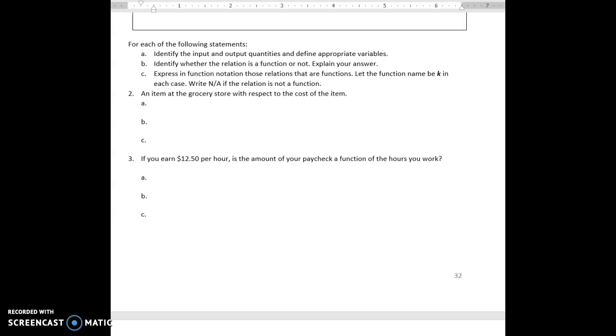We're going to do parts A, B, and C. First, identify the input and output quantities - it's always the first thing we want to do. Then we're going to identify whether the relationship is a function or not. If that relationship is a function, then we are going to write it in function notation using the function name K.